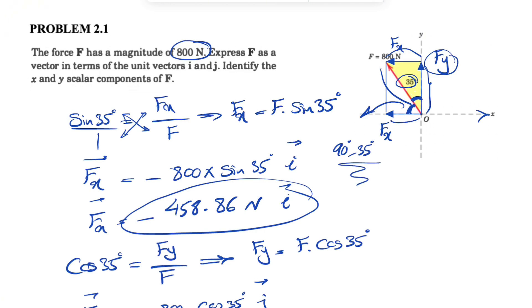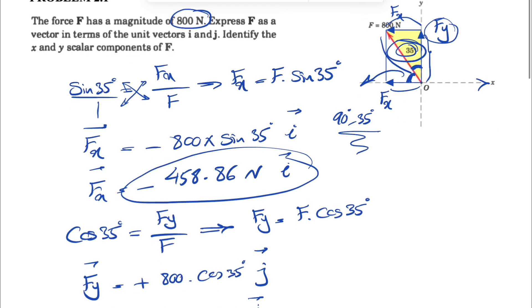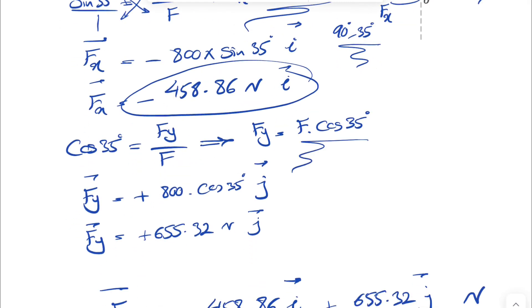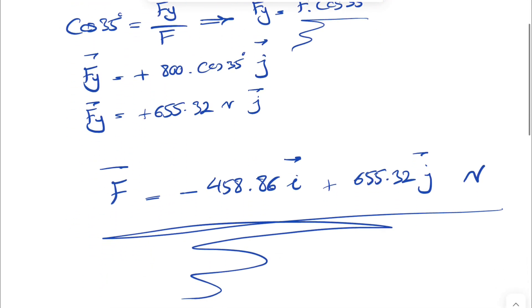We need to keep this in mind: as long as we have the angle of that force with the x axis, cosine of that angle would be the x component, and sine of that angle would be the y component. We went with the angle that we have with the y axis. That's why our x component is sine and y component is cosine.